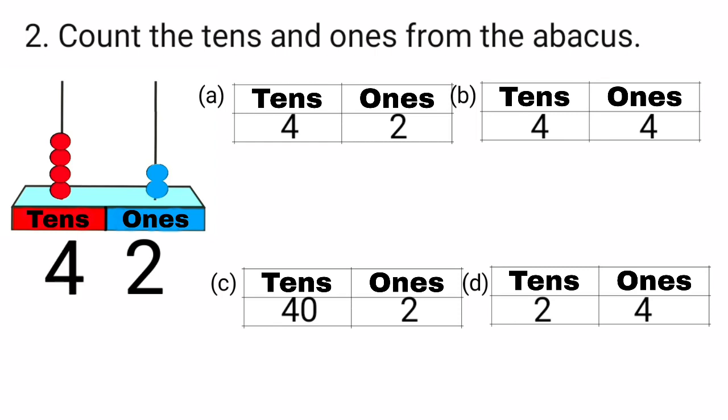We have seen that the abacus is showing the number 4 tens and 2 ones. Now we will move to option A: 4 tens and 2 ones. It is the right answer. We have already counted 4 tens and 2 ones. So we will put a tick mark at option A that is 4 tens and 2 ones.